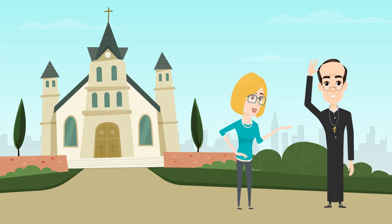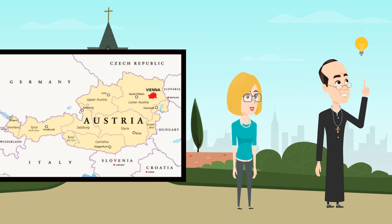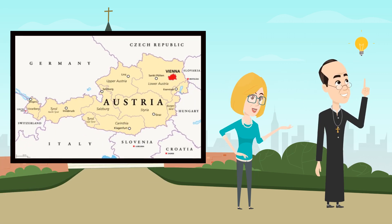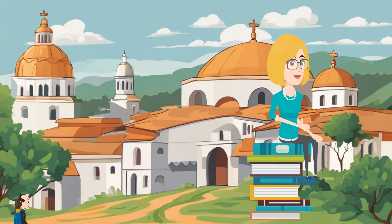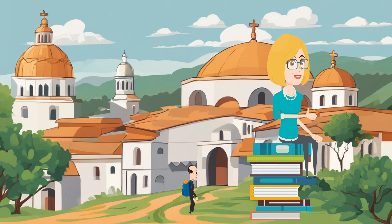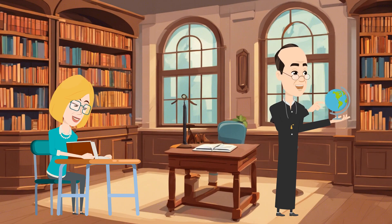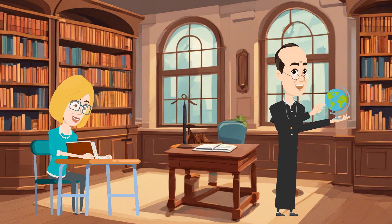Gregor Mendel is most famously known as the father of modern genetics. He was born in Austria in 1822 and was a bright and talented child. As he sought to further his academic studies in early adulthood, he studied to become a monk. It's important to know that at the time, monasteries were centers of culture and research. As such, Mendel was able to study math, physics, and botany at various universities and institutions.